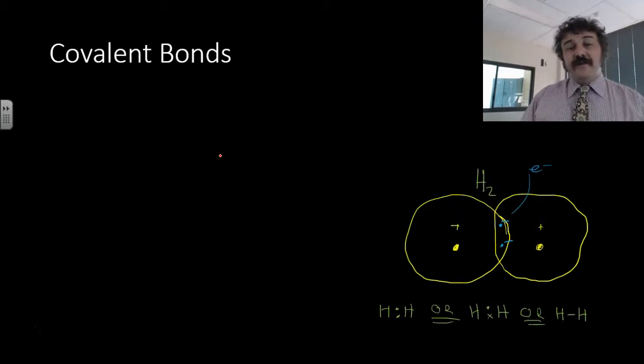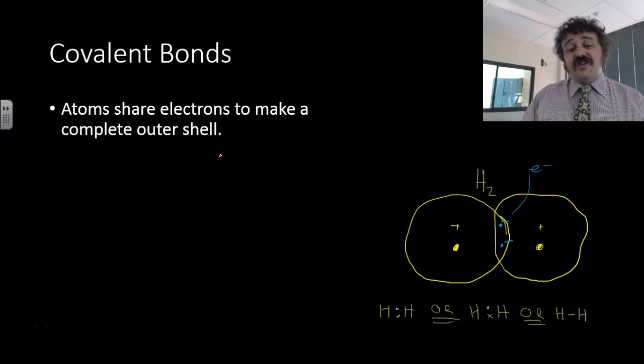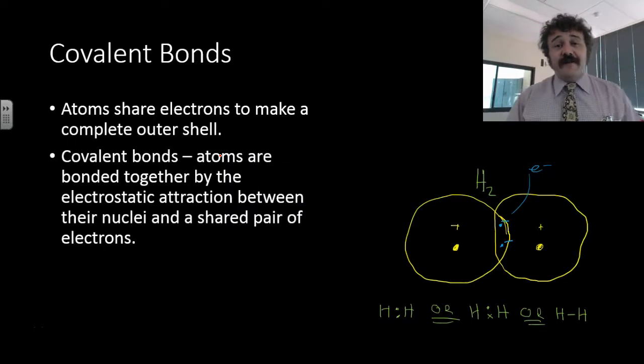So what is a covalent bond? Basically, it's when atoms share electrons to make a complete outer shell, so they're making a complete octet by sharing electrons. However, that's not what the bond is.